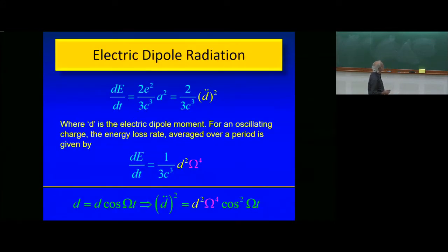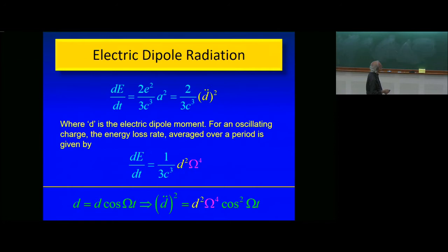Neutron stars were discovered as pulsars. Before we discuss pulsars, let us briefly review elements of radiation theory. You know that an oscillating charge will radiate, and this is the famous Larmor formula: the energy loss rate is 2e²/3c³ times the square of the acceleration.